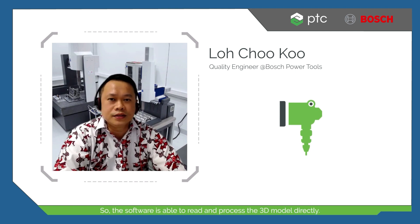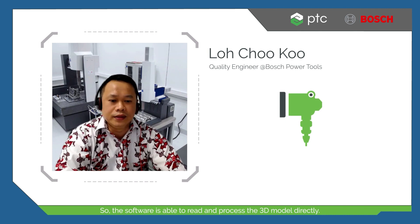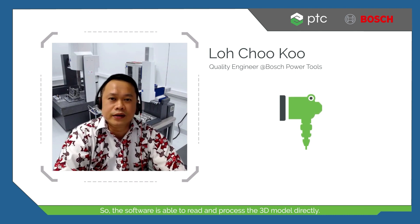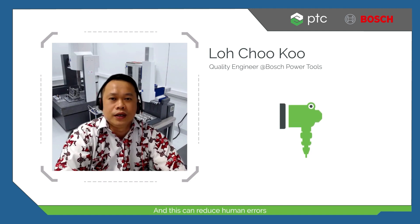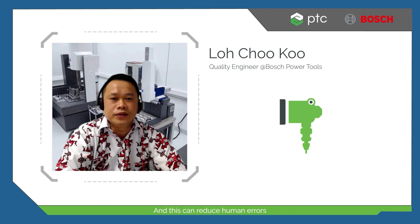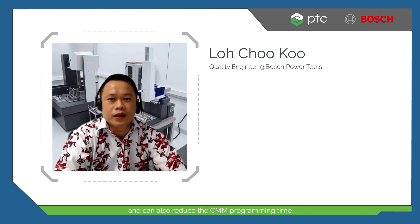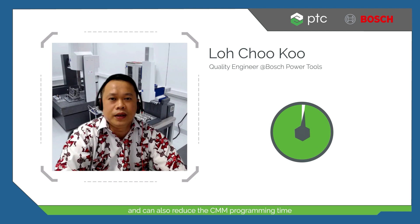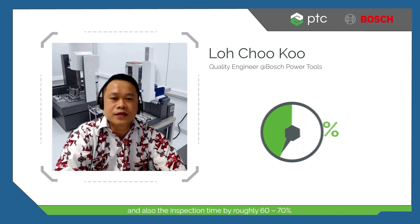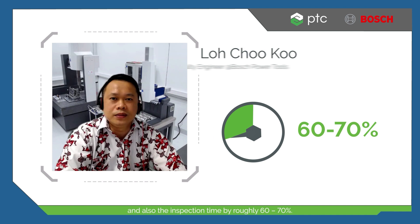The Zeiss CMM Calypso software is able to read and process the 3D model directly, which already contains all the information. This can reduce human errors, CMM programming time, and inspection time by roughly 60 to 70%.